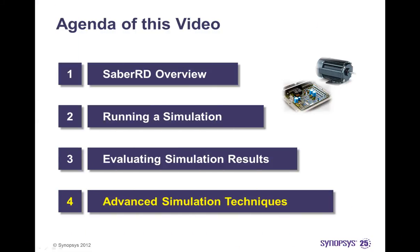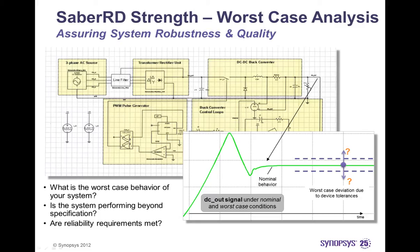It is often needed to go beyond basic types of analysis like a simple transient analysis, driven by the requirement to get a detailed understanding of the quality of the system. Sabre RD supports very capable advanced analysis and modeling solutions that precisely address this requirement. I will now go back to the AC-DC power converter and take a deeper look from a worst case perspective. Each implementation contains component tolerances, which may be caused by environmental conditions or manufacturing effects, and these impact the behavior of the entire power converter system.